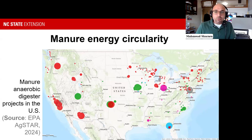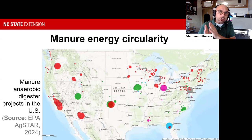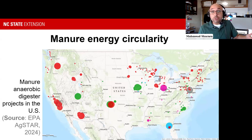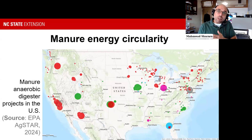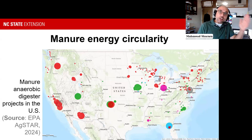Green represents pig or swine digesters, pink represents poultry, and gray represents mixed digesters. Year on year we are seeing a significant increase in these systems, because they are managed to align the economics and emission reductions on many fronts. These are valuable lessons for us as we target the other attributes of manure.